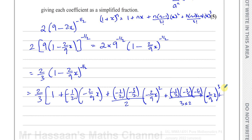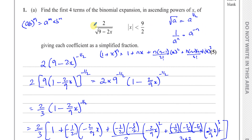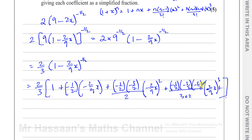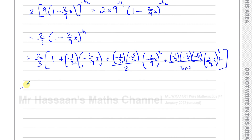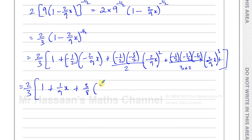Now we have the factor of 2 outside the bracket. The first term gives 1. For the second term, minus times minus gives plus, and the 2s cancel, leaving 1/9 x. For the third term, (−1/2)(−3/2) over 2 is positive 3/8, and (−2/9 x)² gives 4/81 x². So we write that as 3/8 times 4/81 x².